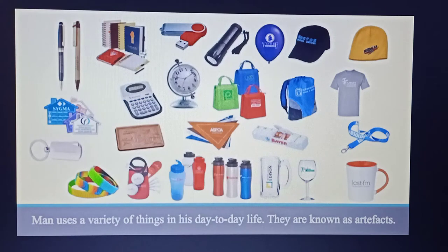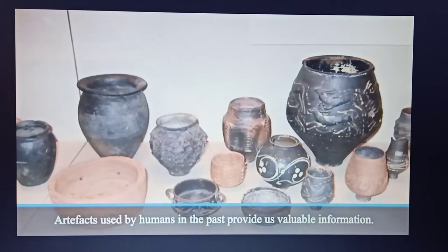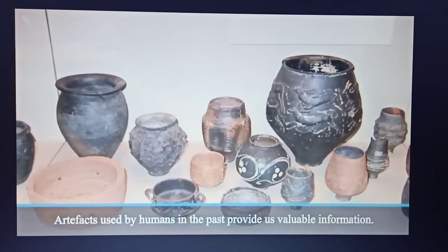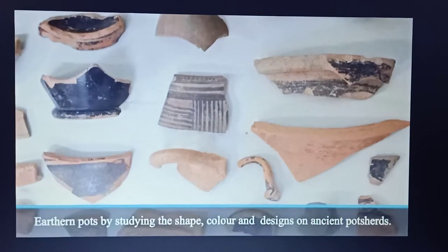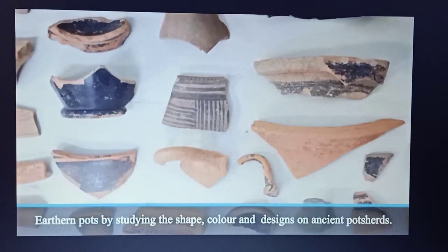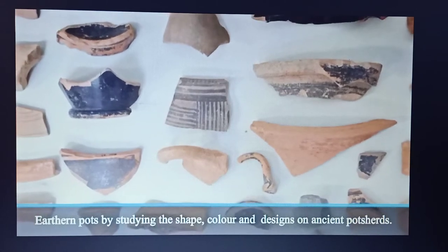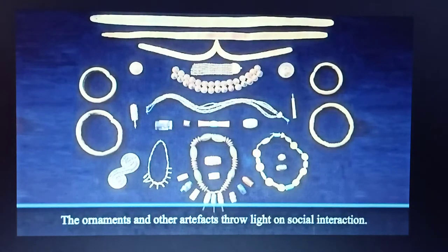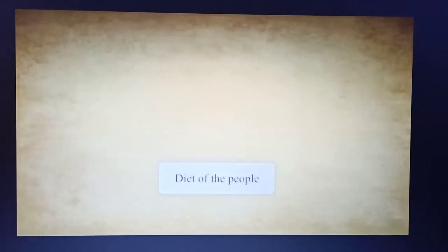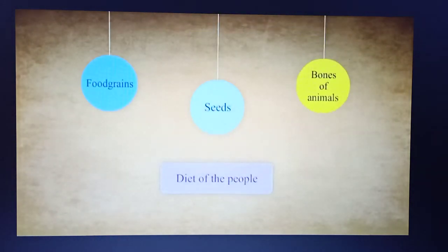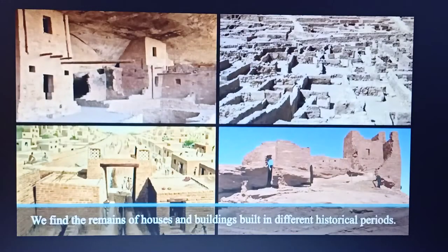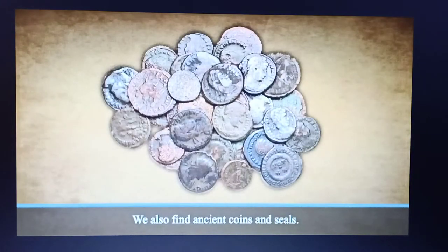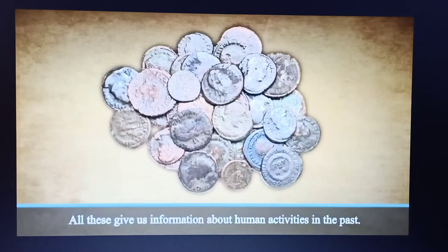Man uses a variety of things in his day-to-day life. They are known as artifacts. Artifacts used by humans in the past provide us valuable information about life in ancient times. We can decide the period of ancient artifacts like earthen pots by studying the shape, color and designs on ancient potsherds. The ornaments and other artifacts throw light on social interaction. We get information about the diet of the people from the remains of food grains, seeds and bones of animals found in excavations. Also, we find the remains of houses and buildings built in different historical periods.